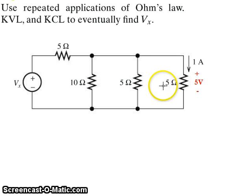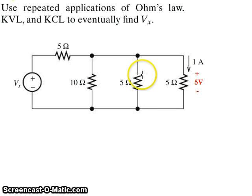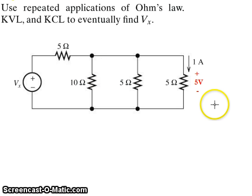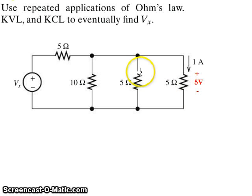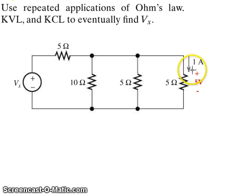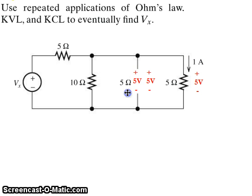Now, this 5 ohm resistor is in parallel with the other 5 ohm resistor, and that in turn is in parallel with the 10 ohm resistor. So what we can say is that the voltage drop across these three resistors are all 5 volts — 5 volts here, and 5 volts there as well.